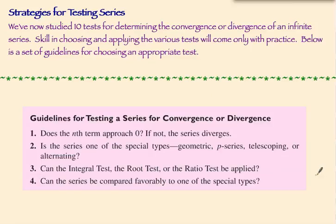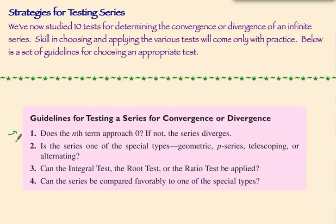First, ask: does the n-th term approach zero? If not, the series diverges — use the n-th term test for divergence, and you're done. Second, is the series one of the special types: geometric, p-series, telescoping, or alternating? If you can identify it as a special type, you have the rules you need to test for convergence or divergence.